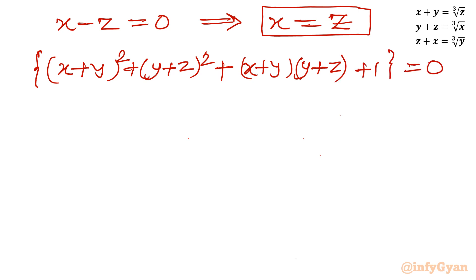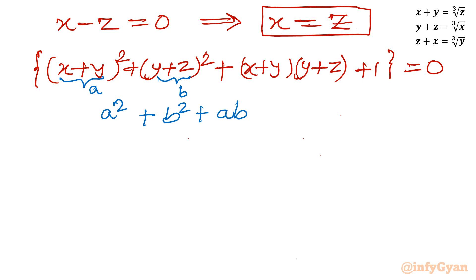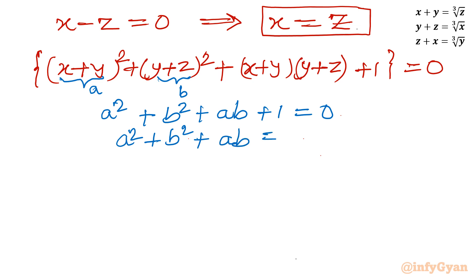I will substitute: let a = x+y and b = y+z. Then the picture changes and it becomes a² + b² + ab + 1 = 0. Taking 1 away from both sides: a² + b² + ab = negative 1.